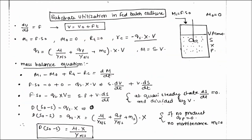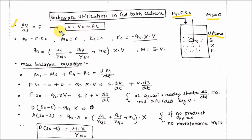Let's discuss substrate utilization in fed batch culture. There is intermittent feeding of substrate, so Mi = F·S₀ and Mo = 0 (no continuous volume removal). dV/dt equals flow rate and V = V₀ + Ft. The first step is to calculate parameters Mi, Mo, Rg, and Rc: Mi = F·S₀, Mo = 0, Rg = 0 (no substrate generation), and Rc = qs·x·V (consumption of substrate).